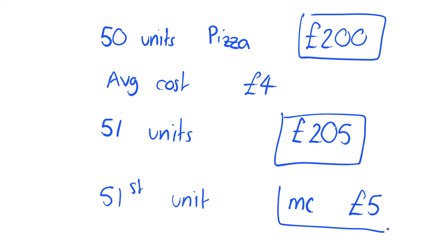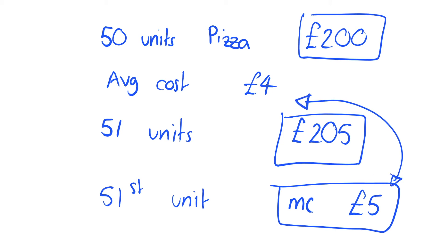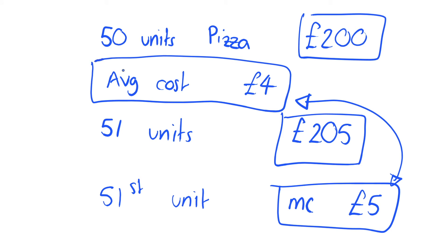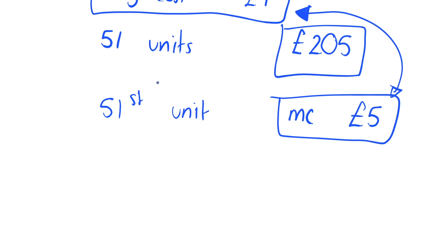And clearly this £5 is different from our average cost. Our average cost is just, on average, what does each unit of pizza cost us to produce. Whereas we don't really care about that when we're thinking of marginal changes — we only care about what the next pizza costs us.